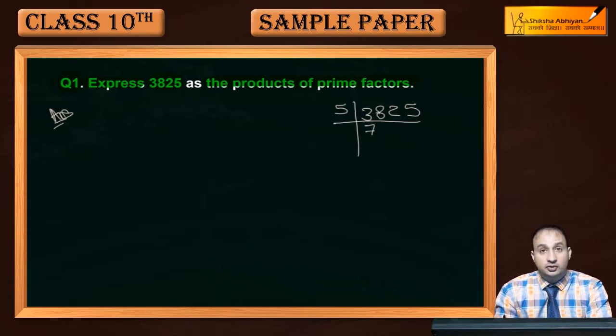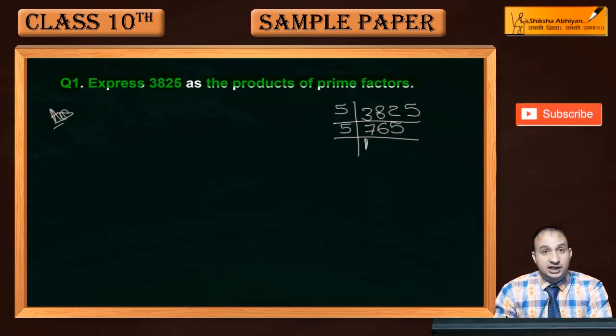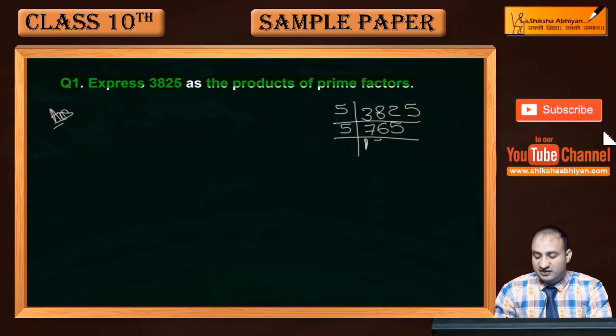3 जो है बचेगा 3 और 2, 32 हो जाएगा. 6 जा 30 and then 25. 5 जा 25. Again यह 5 से divide हो जाएगा, now 5, 1 जा 5, बचेगा 2, 2 और 6, then 5 जा 25.